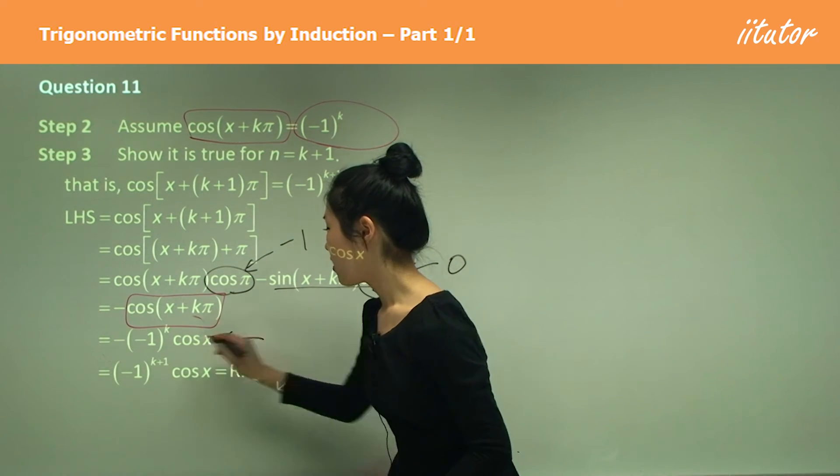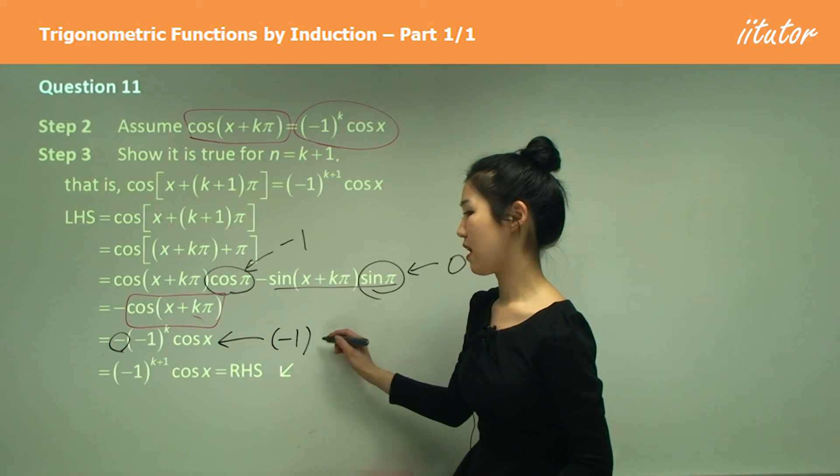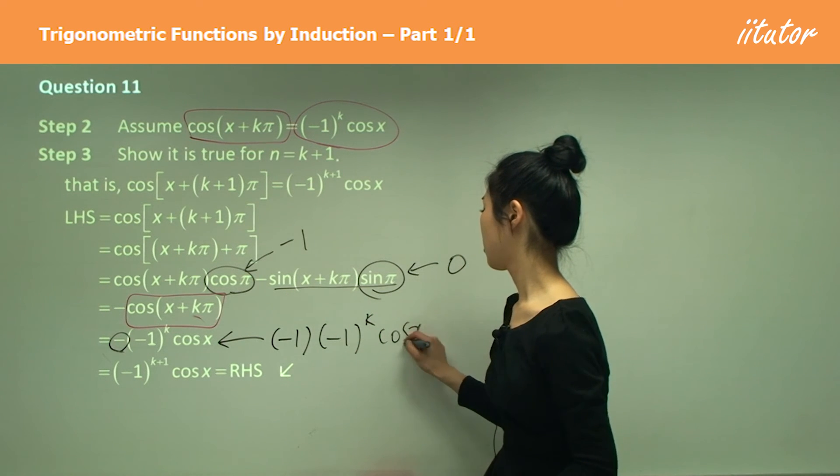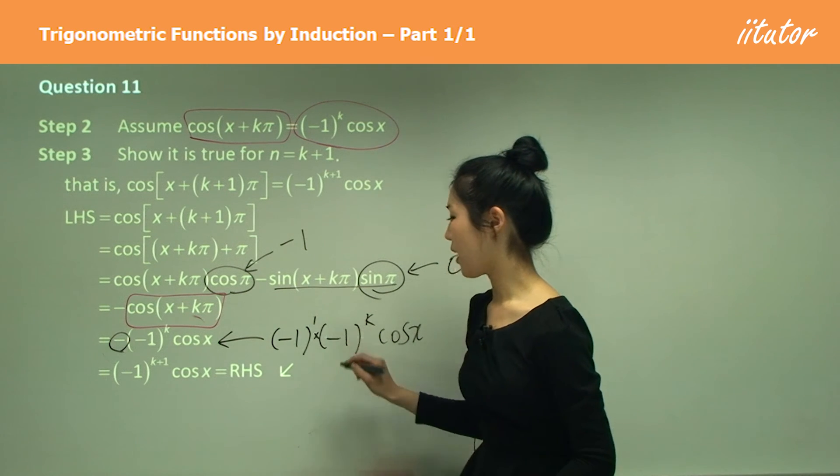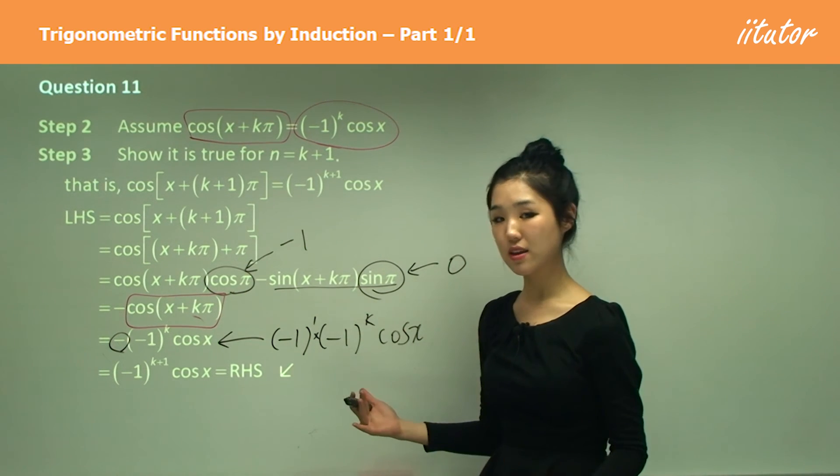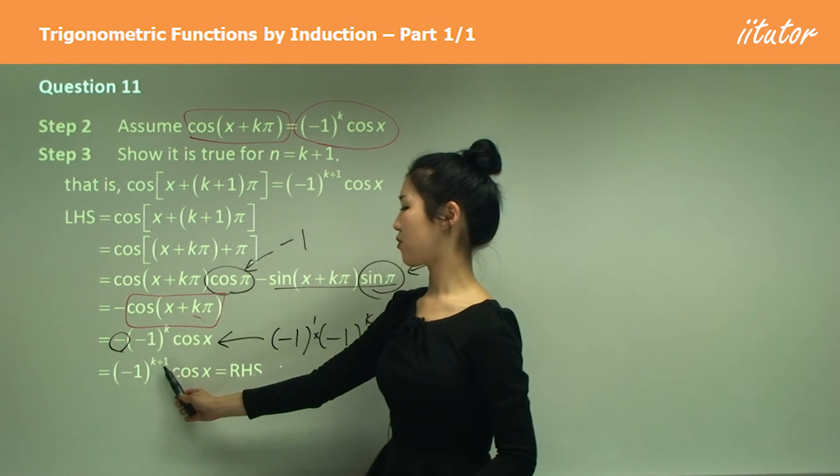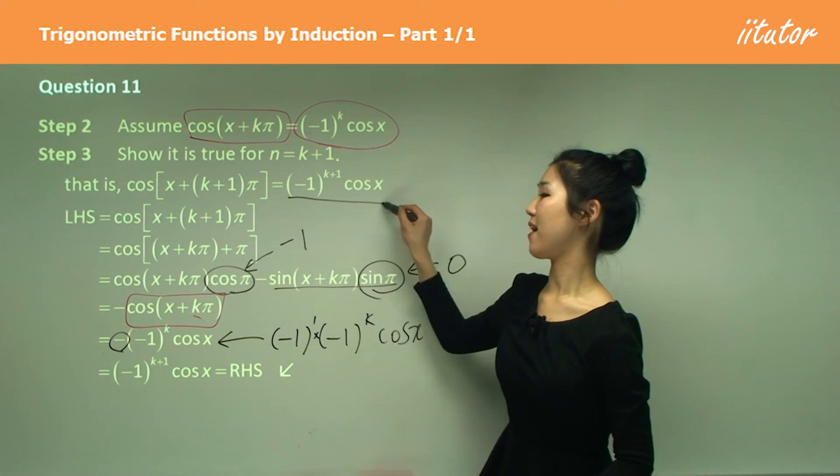So basically here guys, this negative, it's basically just negative one, isn't it? It's the same as putting negative one out the front. So this is negative one to the power of one. So we're multiplying and we know that that is same. So we're just with our index laws, when we're multiplying, we simply add the indices. So the index for here will be k plus one, which is the same as the right hand side.